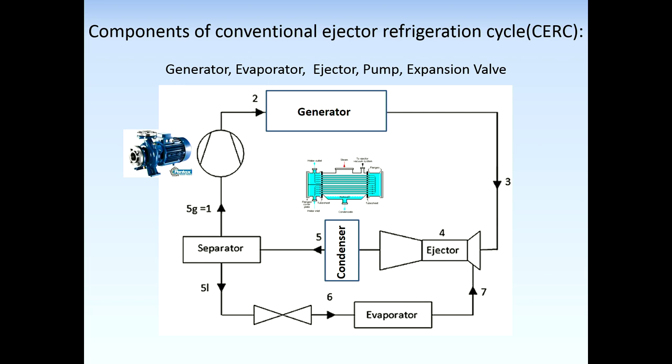The high pressure fluid exits from the generator and moves the low pressure fluid exiting from the evaporator, entraining it and mixing them together.